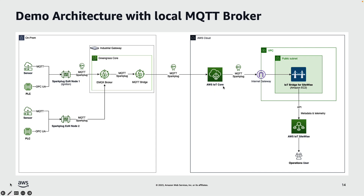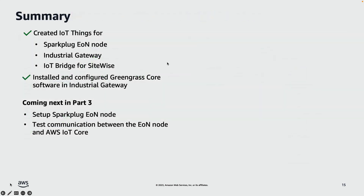And that's all for this video. Let's summarize. In this video, we created IoT things for the Sparkplug Edge of Network Node, Industrial Gateway, and IoT Bridge for SiteWise. Then, using Greengrass core software, we prepared our industrial gateway to receive Sparkplug messages from the Edge of Network Node. In the next video, we'll set up a Sparkplug Edge of Network Node environment using Ignition software and test communication with AWS IoT Core. Thank you for watching.